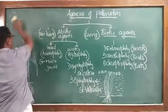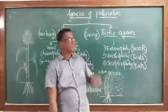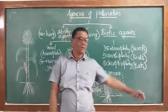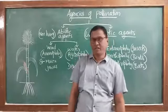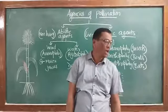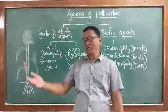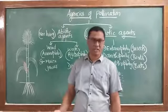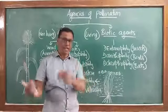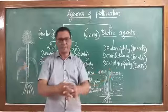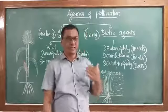Today we shall study agencies of pollination or agents of pollination. In angiosperms, the male and female structures are non-motile — they cannot move on their own. Therefore, to bring the pollen grains and the female structures (stigma) closer to one another, we require some kind of external factors or agencies for pollination. These agencies are mostly required in xenogamy and to some extent in geitonogamy, while autogamy generally does not require them.